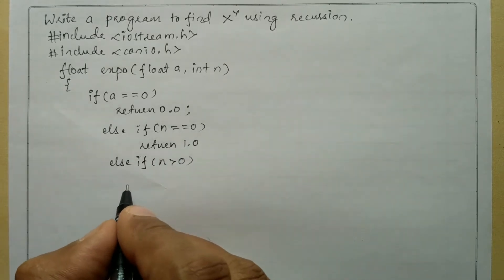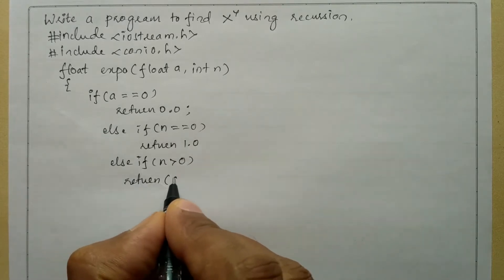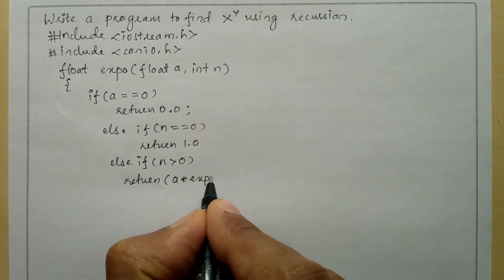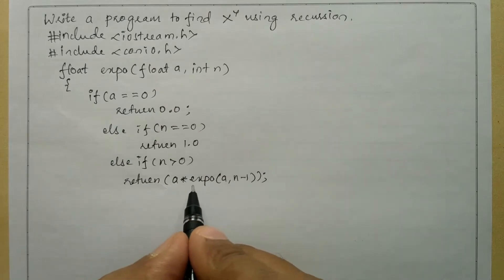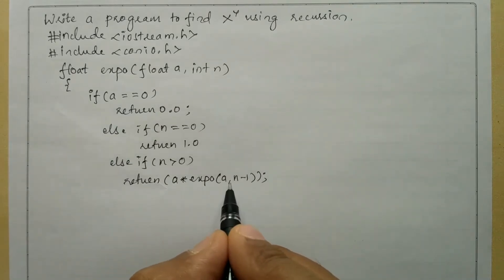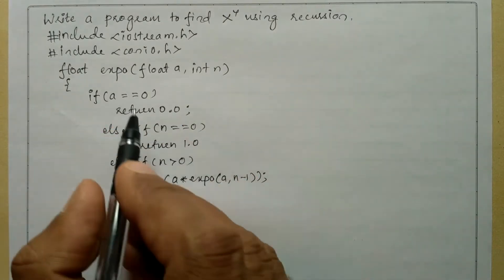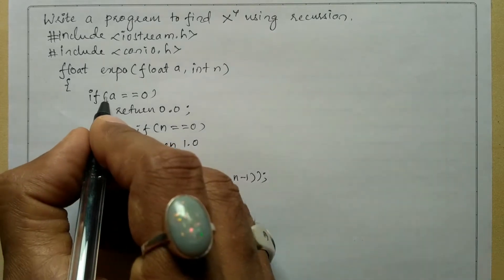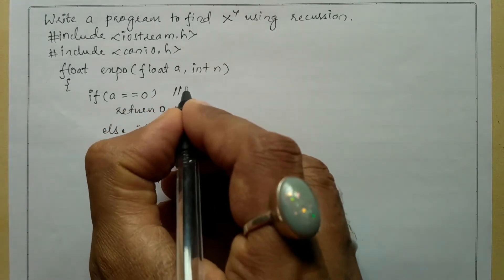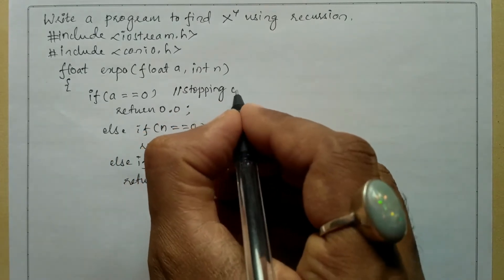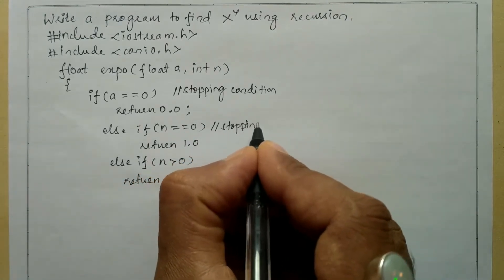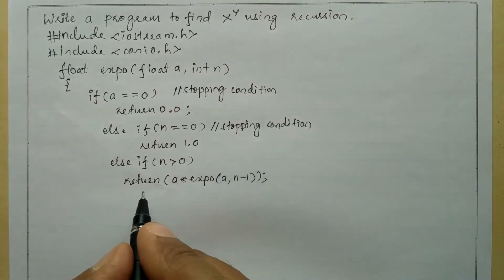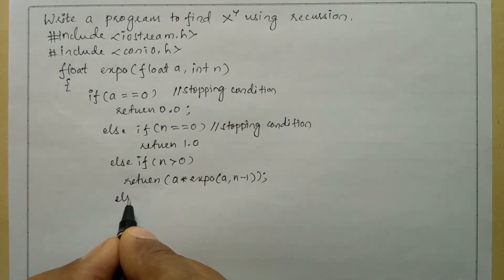Else if n is greater than zero — that is, the exponent is positive — we return a multiplied by the function call expo(a, n-1). Here you can see the function calling itself recursively. Both the a==0 and n==0 conditions are stopping conditions. Without stopping conditions, a recursive function enters an infinite loop.